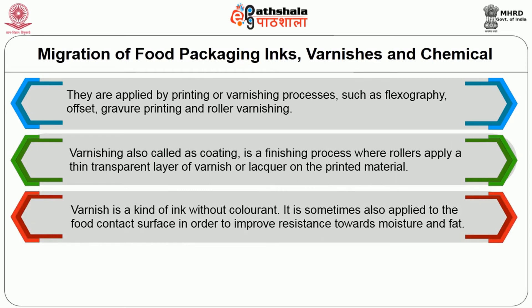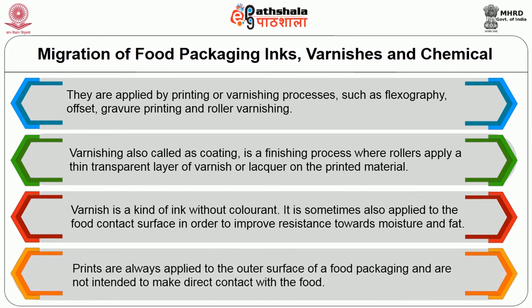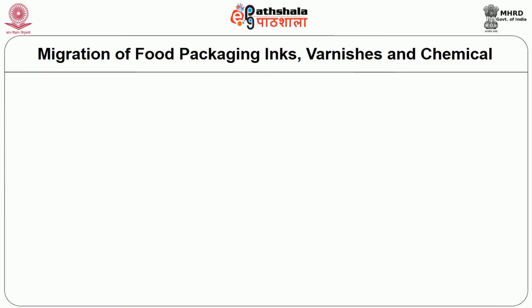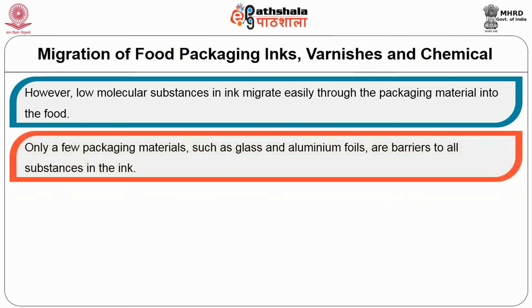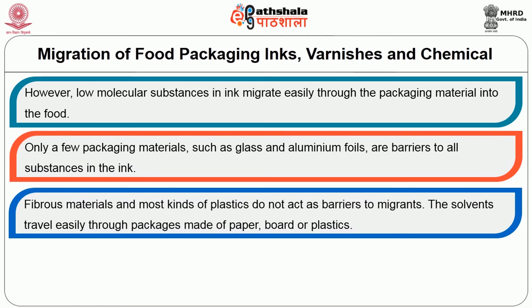Varnish is sometimes also applied to the food contact surface in order to improve resistance towards moisture and fat. Prints are always applied to the outer surface of the food packaging and are not intended to make direct contact with the food. However, lower molecular weight substances in ink migrate easily through the packaging material into the food. Only a few packaging materials such as glass and aluminum foils are barriers to all substances in the ink. Fibrous materials and most kinds of plastics do not act as barriers to migrants.